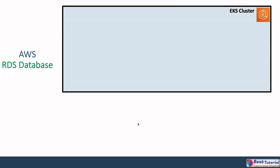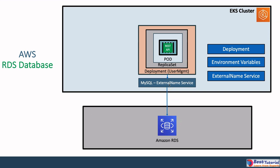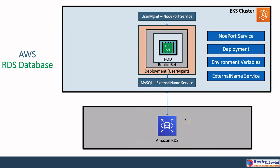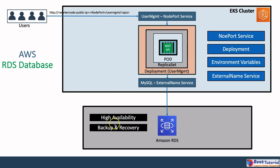With that said, we can use the RDS database as our data store. We remove the MySQL pod and use Amazon RDS database instead. The advantages include: automatically, by default, you will get high availability; automatic backup and recovery scripts are available, directly configurable from the management console; and you can create any number of read replicas.